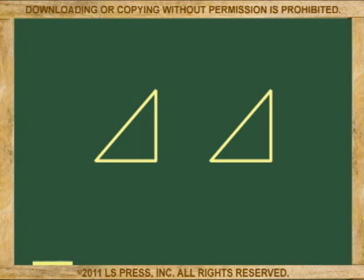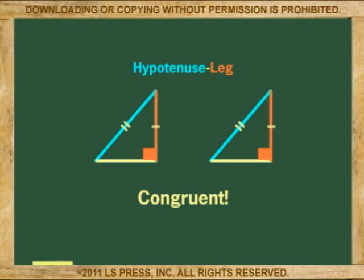If you are dealing with right triangles, that is, triangles with a 90-degree angle, and the hypotenuse and one of the corresponding small legs are equal, then the right triangles are congruent, without considering the other sides or angles. This congruency is called hypotenuse-leg, or HL for short.